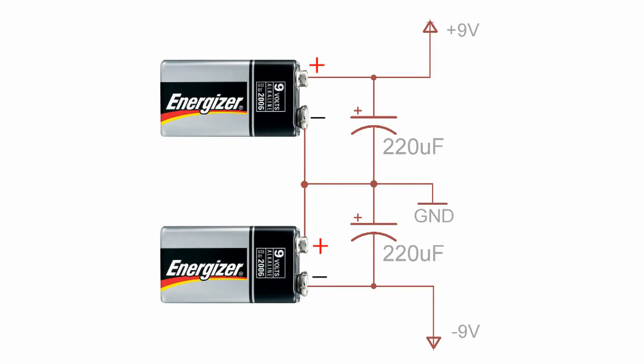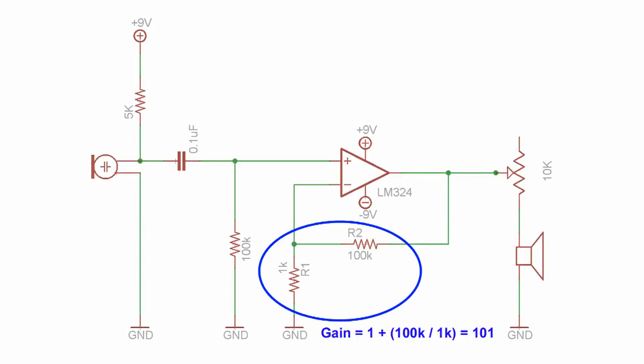To power the amplifier, I'm going to use the same 9 volt battery circuit that I showed you earlier. If you look at the resistor values I've chosen here, you can see that they'll give the amplifier a gain of 101, close enough to 100.